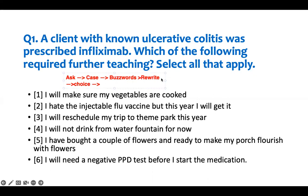If you meet that criteria, you pick it. You don't compare anything. You don't move until you make a decision. Going down to find another answer that is more favorable to you will make you start thinking and comparing answers — we don't want that. And then after you make a choice, you move on.